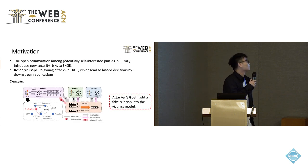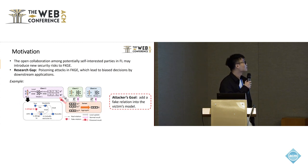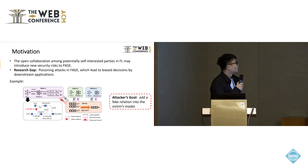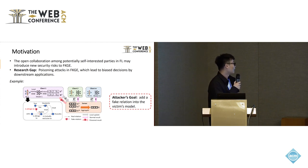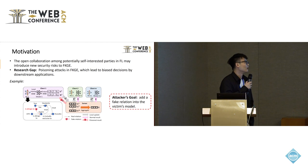However, the open collaboration among potential self-interested parties in federated learning may introduce new security risks to federated knowledge graph embedding. A research gap is poisoning attacks in FKG, which lead to biased decisions by downstream applications. For example, a medicine company bribes a server to manipulate a victim client into predicting that Tom is allergic to aspirin, resulting in the doctor prescribing penicillin to Tom. So the attacker's goal is to add a fake relation into the victim's model.